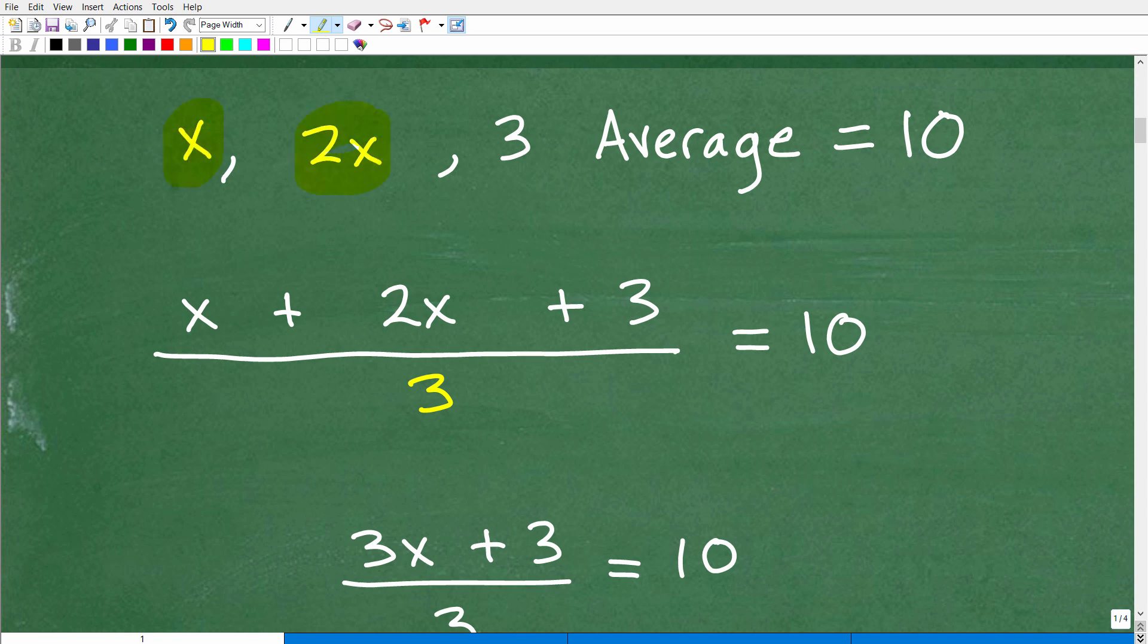All right, so what's going on here? Well, we have some variables going on or some terms. We have x. That represents some number. 2x represents this number, twice that number. And then we have 3. But we know that the average is equal to 10.